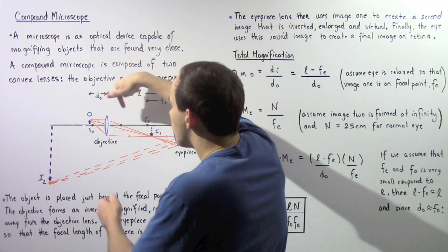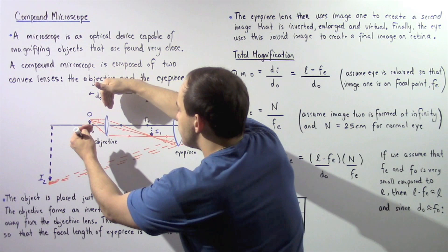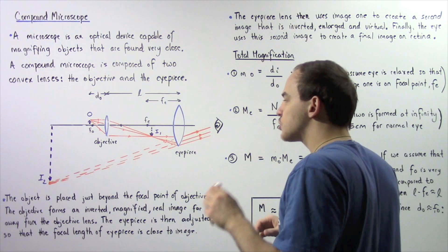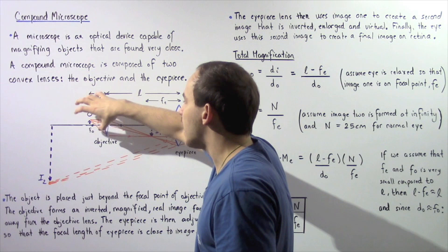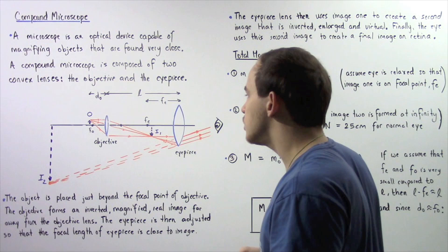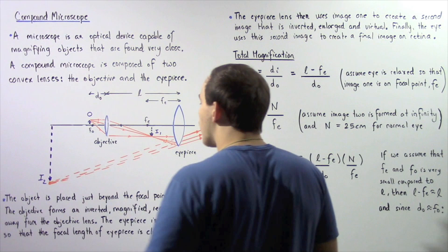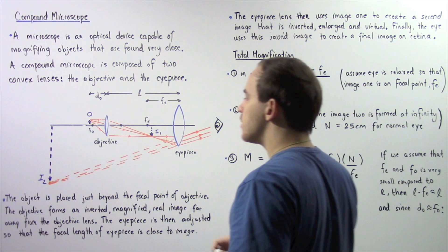All the rays of light bounce off our object, move through and refract inside the objective lens, and then converge at a single point where image one is formed. This image is a real image because it's found on the opposite side of where light is coming from. The image is inverted, points in the opposite direction, and is slightly enlarged compared to the object, found relatively far from the objective lens.